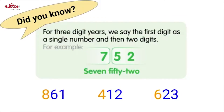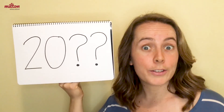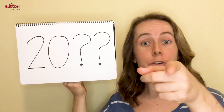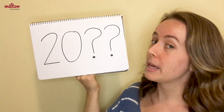For three-digit years, we say the first digit as a single number and then a two-digit number — for example: seven fifty-two, eight sixty-one, four twelve, six twenty-three. So when were you born? Maybe in the year 2010?